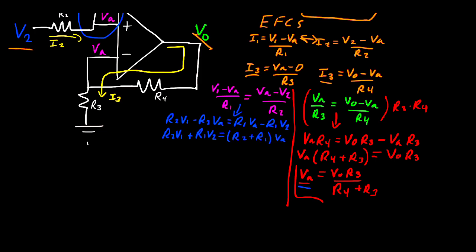Now let's take that definition of VA that we found and plug it in. We can say that R2 V1 plus R1 V2 is equal to R2 plus R1 multiplied by R3 VO divided by R4 plus R3.